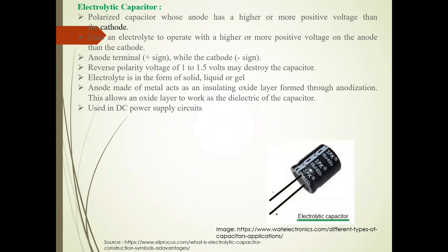We will see the electrolytic capacitor. In this capacitor, the anode has higher voltage than the cathode and it uses an electrolyte to operate. The anode terminal is denoted by a plus sign while the cathode is denoted by a minus sign. A reverse polarity voltage of 1 to 1.5 volts may destroy this capacitor. The electrolyte used in this capacitor is in the form of solid, liquid, or gel. The anode, made of metal, acts as an insulating oxide layer formed through anodization, which allows the oxide layer to work as the dielectric of the capacitor. This is an image of this electrolytic capacitor. It is used in DC power supply circuits.